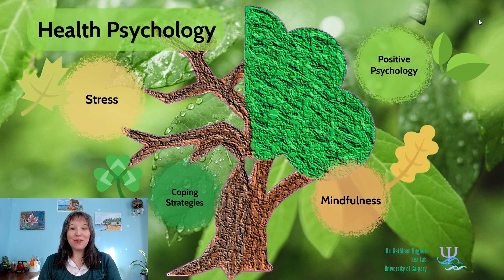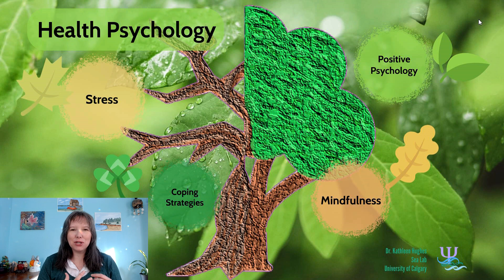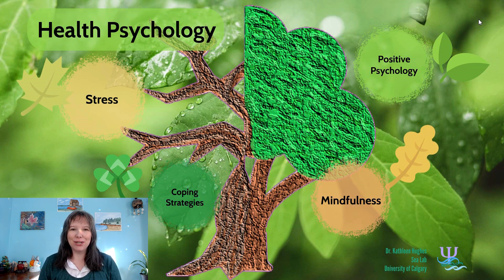Welcome to Introductory Psychology Unit 13. In this unit we're going to be discussing health psychology — specifically two different areas: how we can predict who may be at risk for health complications, and the flip side, how health psychology can predict who's going to thrive and flourish. We'll look at both the positive and negative implications, but we're going to start on the more negative side with the concept of stress.